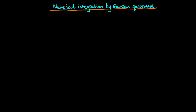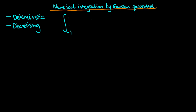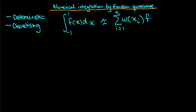In this video I want to provide an introduction to using Gaussian quadrature to do numerical integration. Gaussian quadrature is a deterministic routine for doing integration, opposed to some of the Monte Carlo methods you might encounter elsewhere. It's a method which is based on discretizing the integral. The idea is we replace an integral from minus one to one of f(x)dx with an approximation given by the sum of k terms, summing from i equals one to k of some weight evaluated at xi times f(xi).